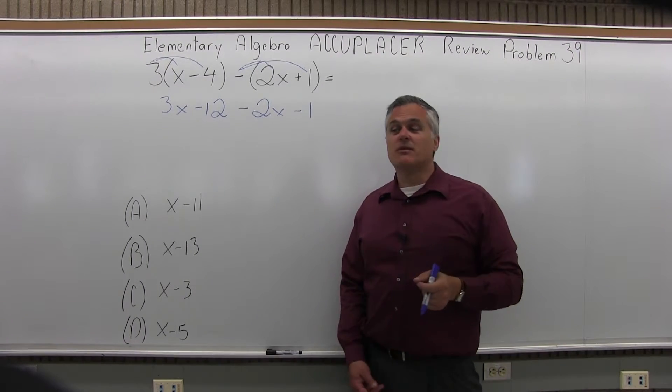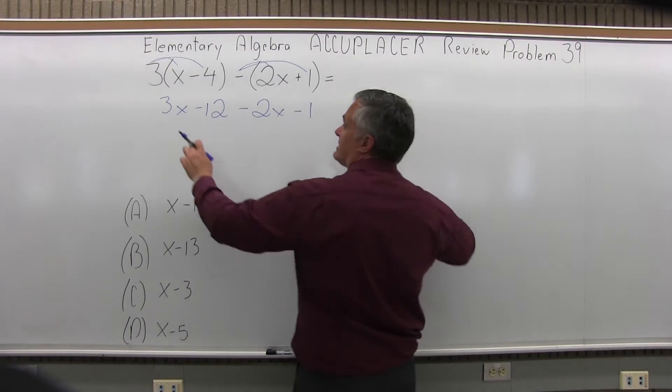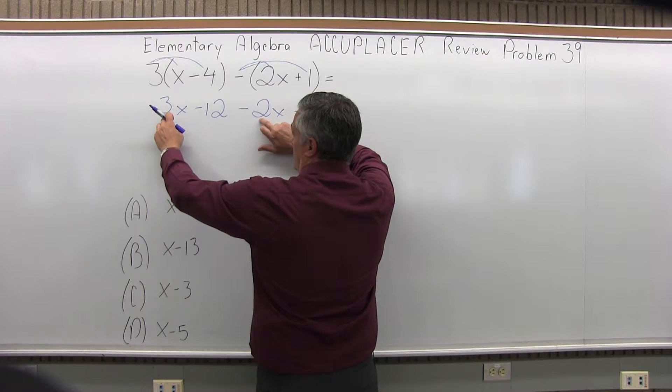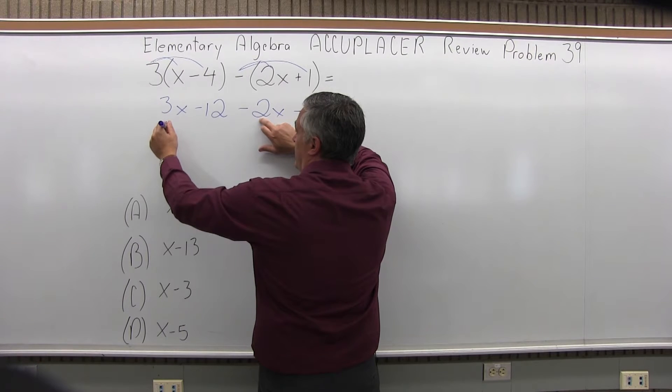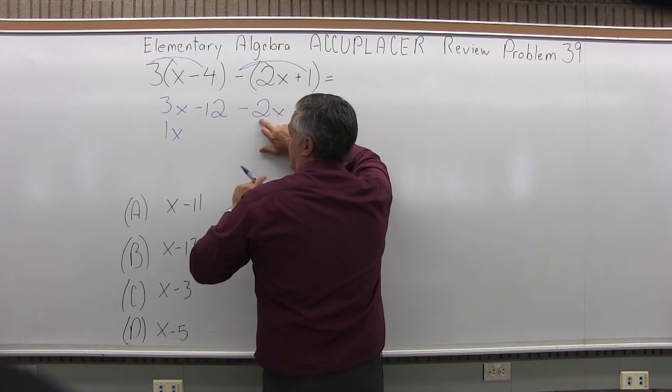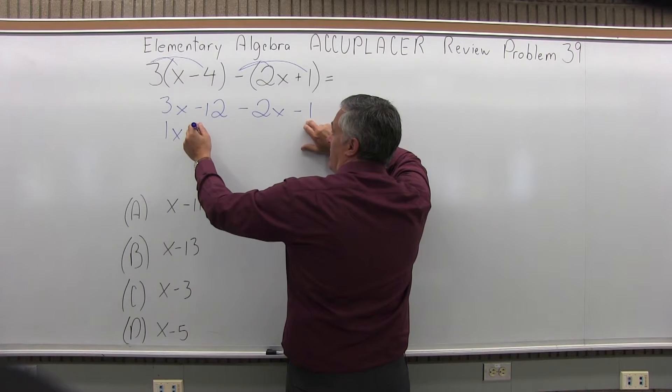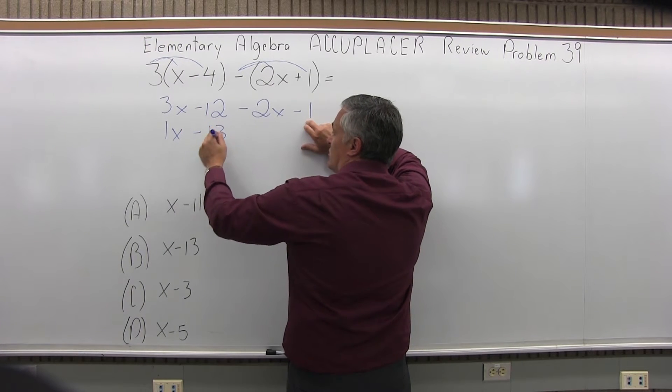Now I can combine my x's and combine my numbers. For the x's I have positive 3x, negative 2x, so I combine the numbers in front. Positive 3, negative 2 is 1x. And now my numbers minus 12 and minus 1 is minus 13.